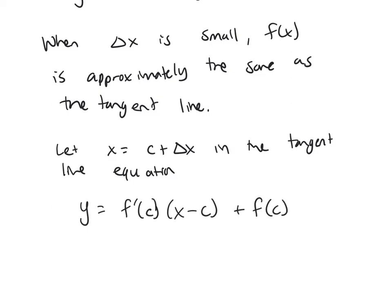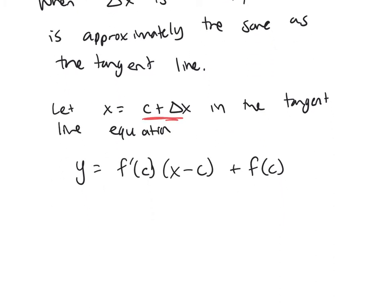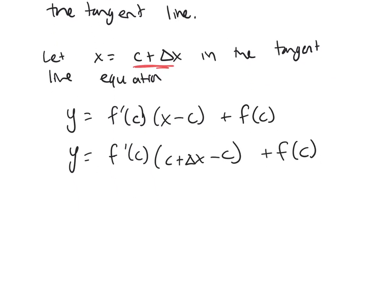And now we're going to replace x by c plus delta x here. So I'll get y equals f prime of c times c plus delta x minus c. And now this c and this minus c cancel. So y is f prime of c times delta x plus f of c.